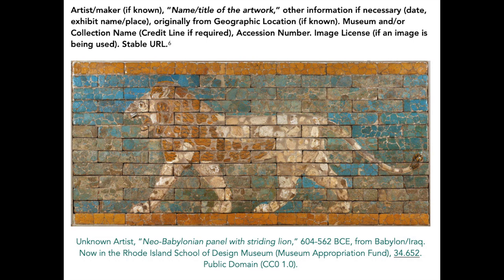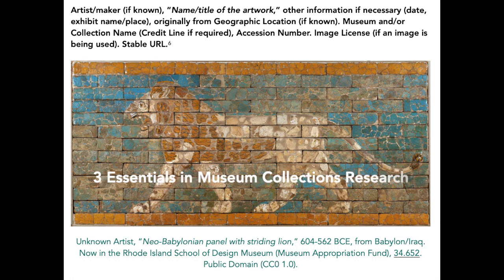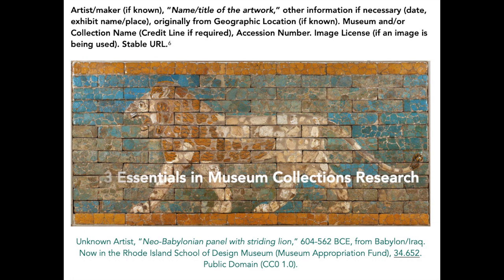The citation should include museum and accession information, as well as the stable link, so that others can find the object in their collection search more easily. Read more about how to cite museum images in our resource, Three Essentials in Museum Collections Research.